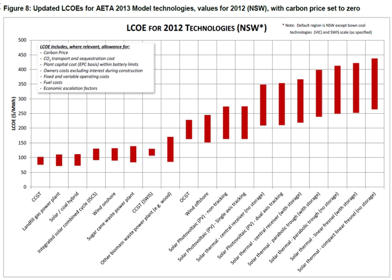Carbon pricing charges those who emit carbon dioxide for their emissions. That charge, called a carbon price, is the amount that must be paid for the right to emit one ton of CO2 into the atmosphere. Carbon pricing usually takes the form of a carbon tax or a requirement to purchase permits to emit. Depending on the assumptions of possible accidents and their probabilities, external costs for nuclear power vary significantly and can reach between 0.2 and 200 euro per kWh.